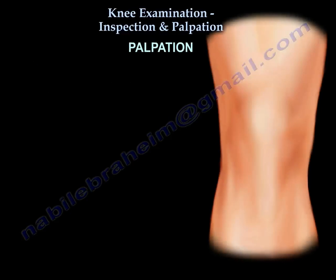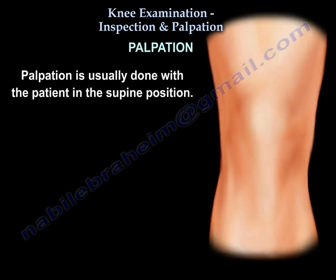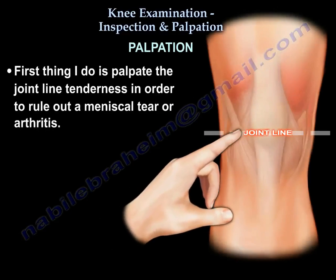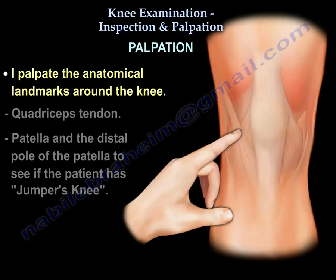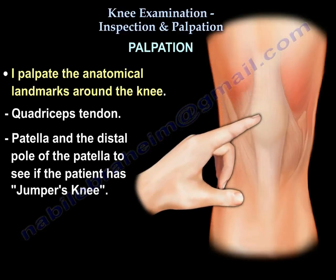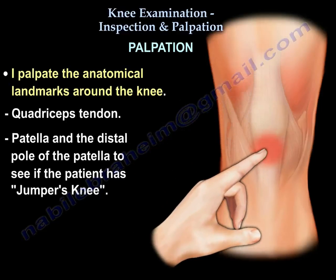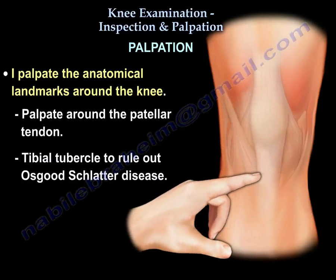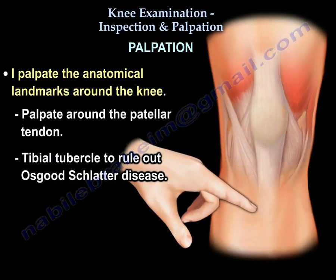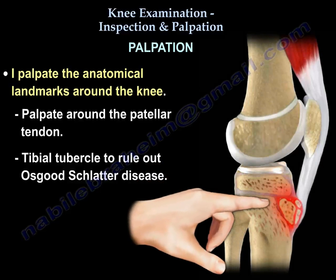Palpation is usually done with the patient supine. First, palpate the joint line for tenderness suggesting meniscal injury or arthritis. Then palpate anatomical landmarks: the quadriceps tendon, the patella, the distal pole of the patella to check for jumper's knee, the patellar tendon, and the tibial tubercle to rule out Osgood-Schlatter disease.